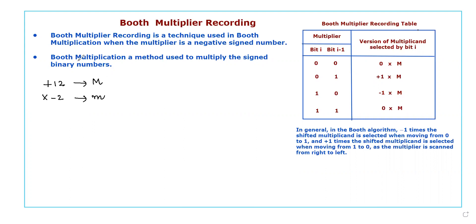To apply the Booth multiplication method to multiply these signed numbers, first we have to convert them in terms of binary. To convert these signed numbers into binary, we assign a sign bit for positive and negative signs. For positive sign, the sign bit value is 0; for negative sign, the sign bit value is 1. Also, whenever we have a negative signed number, it should be specified in two's complement form only.